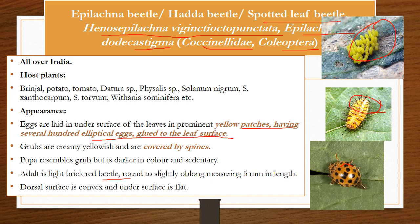Marks of identification: eggs are elliptical and glued to the undersurface of the leaves. Grubs are creamy whitish in color and covered by spines. The pupa resembles the grubs but is sedentary, immovable, and without any spines. The adult is brick red in color, round, measuring 5 mm in length, with the dorsal side convex and the ventral side flat.